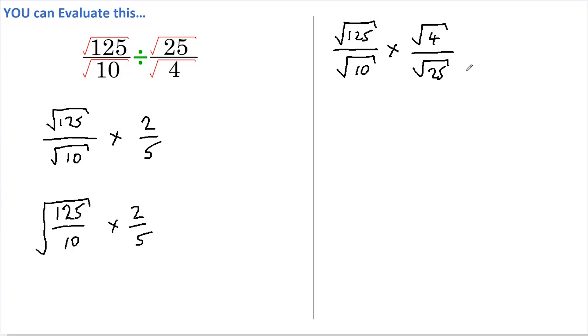Which can be rewritten as the square root of 125 times 4, all over the root of 10 times 25, which gives us the root of 500 over the root of 250.